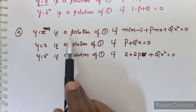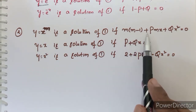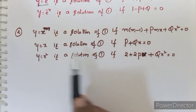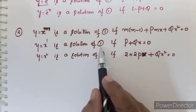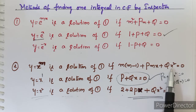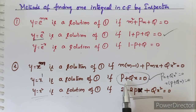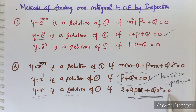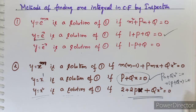Second: y = x^m is a solution of equation 1 if m(m−1) + pmx + qx² = 0. Putting m = 1: y = x is a solution if 1·(1−1) + p·x + q·x² = 0, which simplifies to px + qx² = 0, giving p + qx = 0. If this condition is satisfied, y = x is the solution. Putting m = 2: y = x² is a solution if 2(2−1) + p·2x + qx² = 0, i.e., 2 + 2px + qx² = 0. If this condition is satisfied, y = x² is the solution.